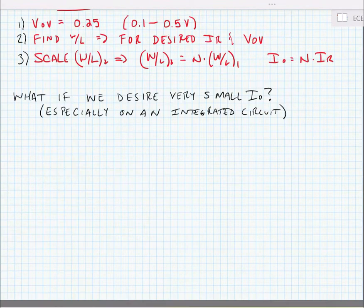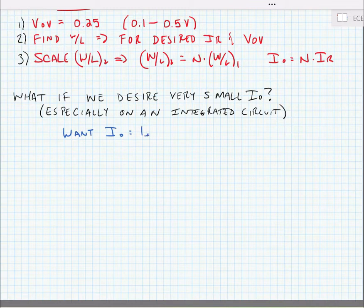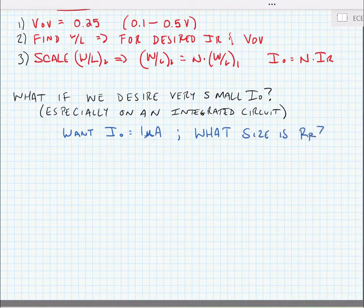Now, what if we desire a very small output current, especially on an integrated circuit? Let's say that we want IO equal to 1 microamp.